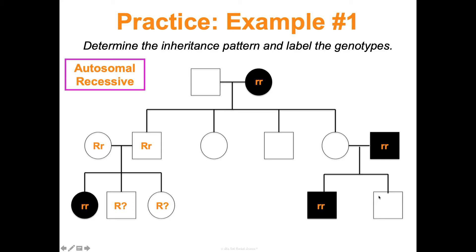Working through specific individuals: one son must be heterozygous because he can only get a little r from his dad. A mother with an affected son must be a carrier — she has a big R (she's normal) but also a little r to pass on. Similarly, tracing through the mother's own parents, we can confirm she received a little r from her mother, and those individuals can also be labeled accordingly. When we can't determine it with certainty, we leave it as a question mark.